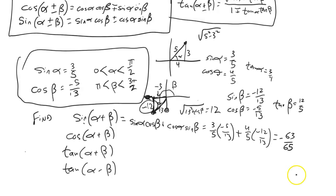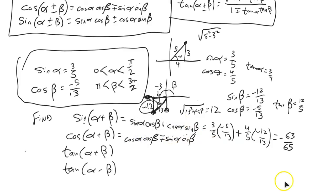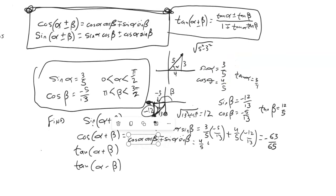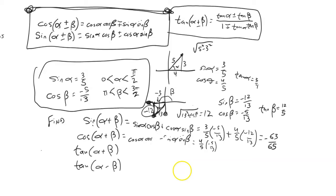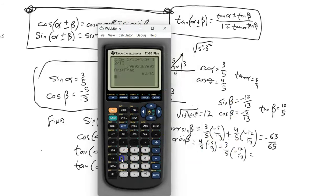For cosine of alpha plus beta: expand using the cosine sum formula — cosine alpha times cosine beta, minus — opposite operator — sine alpha times sine beta. Substituting: (4/5)(−5/13) minus (3/5)(−12/13). That gives 16 over 65.